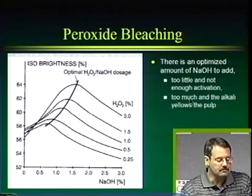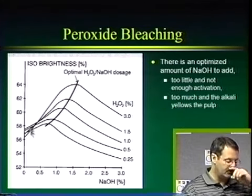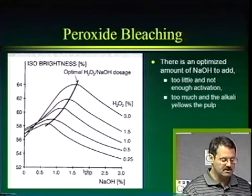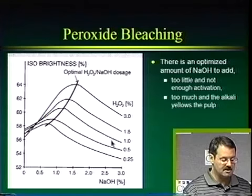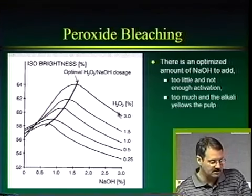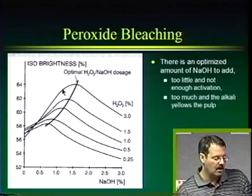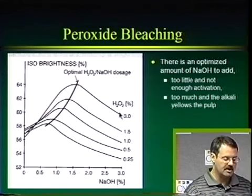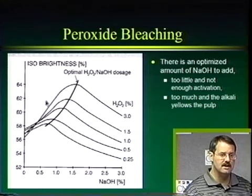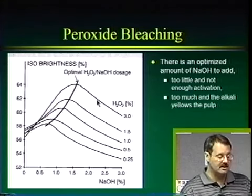Sodium hydroxide is the most common chemical used to increase perhydroxyl anion concentration. However, there is an optimum sodium hydroxide dose: too little means insufficient peroxide activation; too much means the alkali itself yellows the pulp, decreasing brightness. The graph shows iso-brightness versus sodium hydroxide concentration for different peroxide charges — brightness peaks at an optimal NaOH level, then decreases. Sodium hydroxide alone will yellow pulp, which is not desirable.